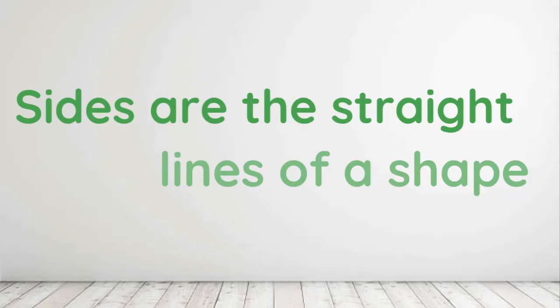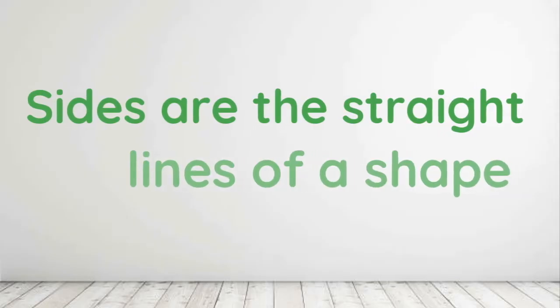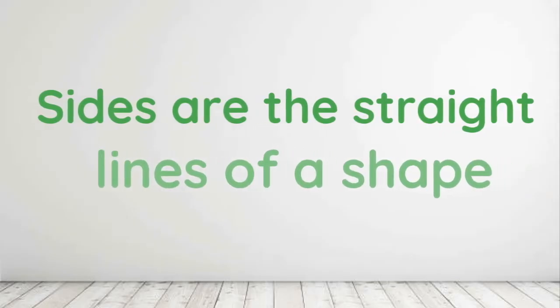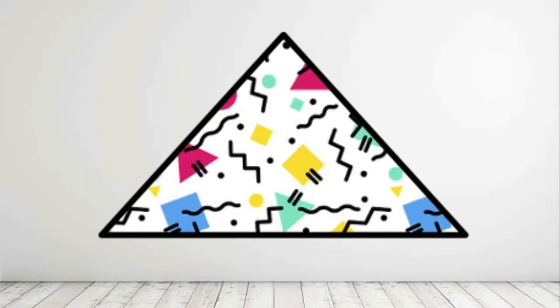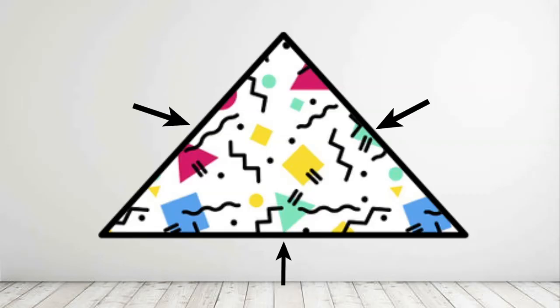Sides are the straight lines of a shape. A triangle has 3 sides: 1, 2, 3.